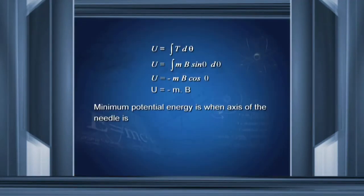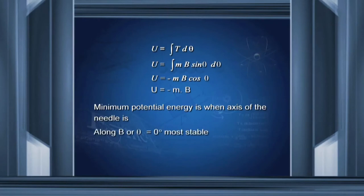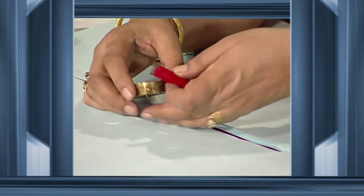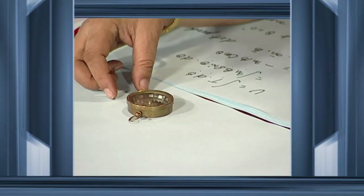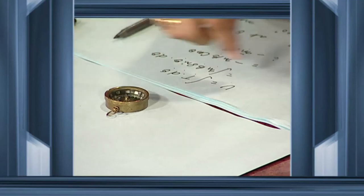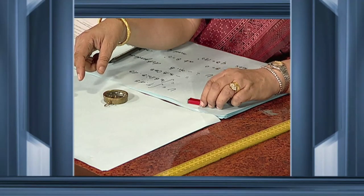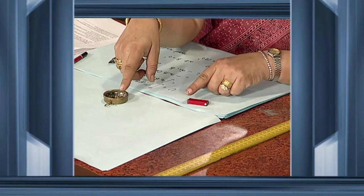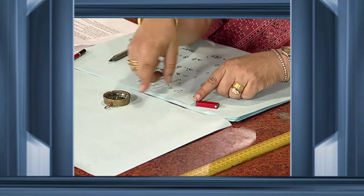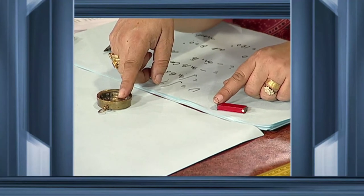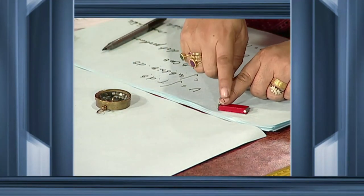What will be the minimum potential energy — when would the dipole be most stable in an external field? Obviously when θ, the angle between M and B, is equal to 0. When θ is 180° it is going to be the most unstable condition, meaning the dipole would tend to deflect right back and turn completely in order to restore its position — it will rotate 180° in order to become stable. For stable equilibrium this alignment is most essential.